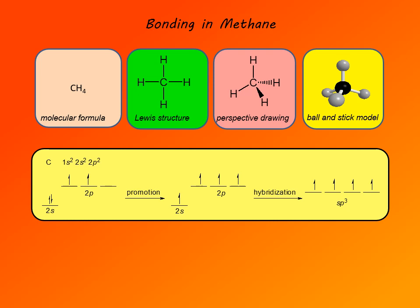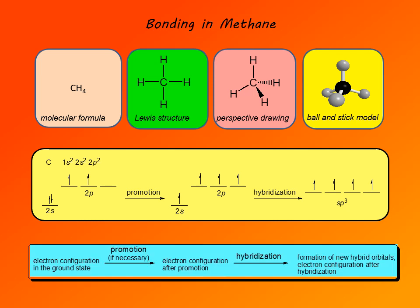Now we have four unpaired electrons. Finally, hybridization results in formation of four sp3 hybrid orbitals, where we have four orbitals of the same energy and same properties. In summary, when considering hybridization on any atom, we consider the electron configuration of that atom in the ground state.